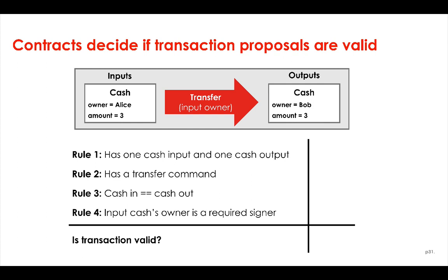Here's an example contract that imposes four rules. The first rule is that the transaction has one cash input and one cash output. The second rule is that the transaction has a transfer command. The third rule is that the value of the cash inputs equals the value of the cash outputs. And the fourth rule is that the owner of the input cash is a required signer.